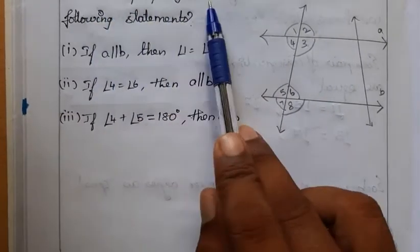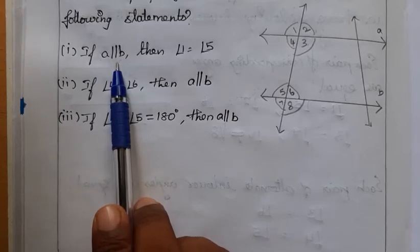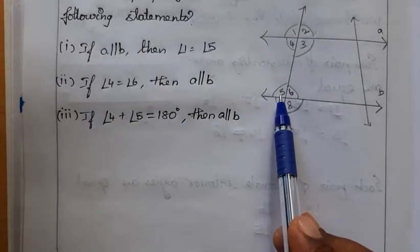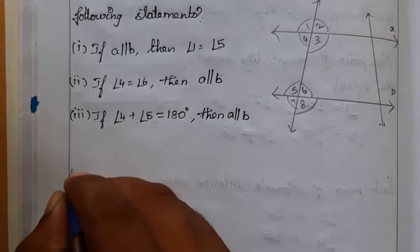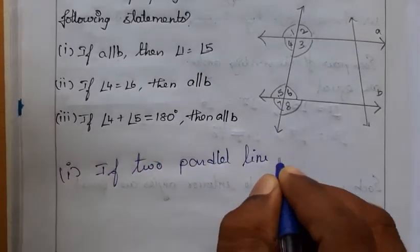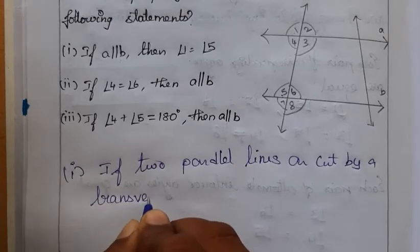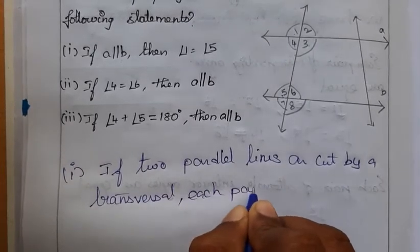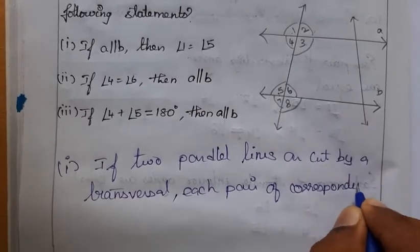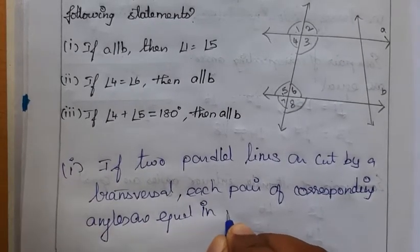Problem: State the property used in each statement if A is parallel to B. First: angle 1 equals angle 5 — we are using corresponding angles. Answer: if two parallel lines are cut by a transversal, each pair of corresponding angles are equal in measure.